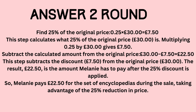This step subtracts the discount of £7.50 from the original price of £30. The result, £22.50, is the amount Melanie has to pay after the 25% discount is applied. So Melanie pays £22.50 for the set of encyclopedias during the sale, taking advantage of the 25% reduction in price.